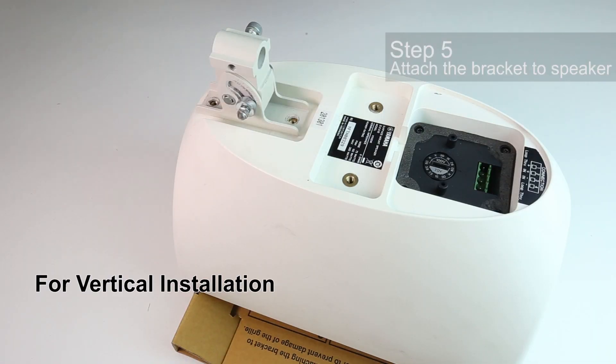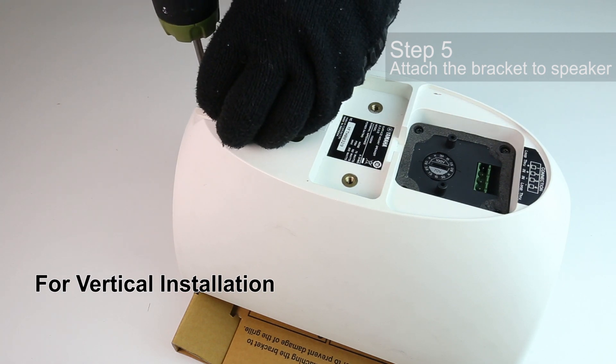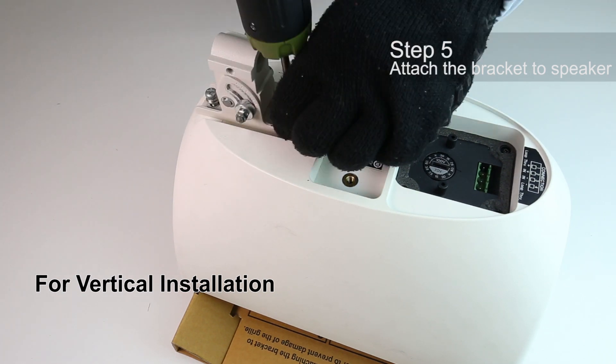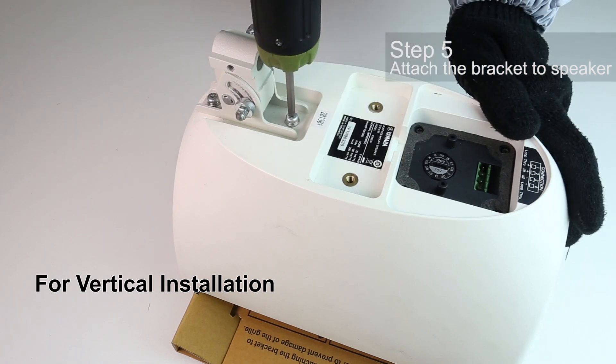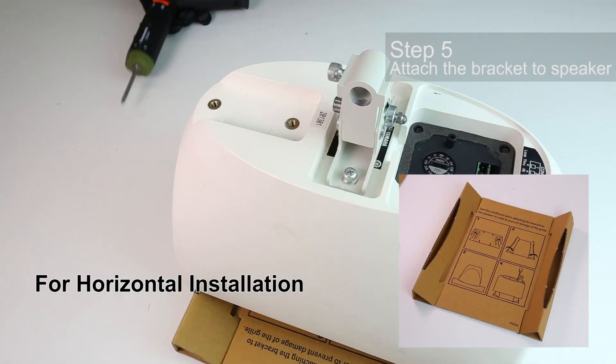Next, attach the mounting bracket to the VXS speaker unit. The VXS5 can be installed either vertically or horizontally. You can use the cardboard that comes with the speakers as a stand to prevent damaging the grill when attaching the bracket.